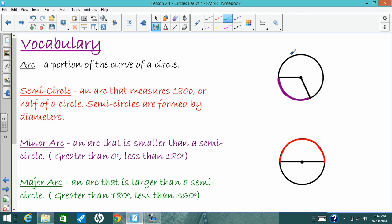And the major arc is bigger than a semicircle, but smaller than the whole thing. So this one I'm tracing in green. That is a major arc. I think it makes sense that the big one is major and the small one is minor.